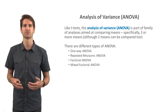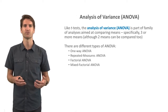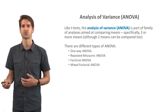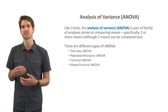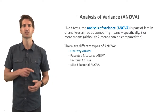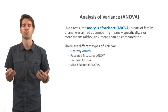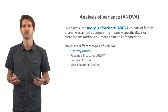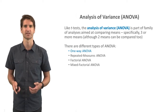There are different types of ANOVA: the one-way ANOVA, repeated measures ANOVA, factorial ANOVA, and mixed factorial ANOVA. In this lecture, we're going to focus specifically on the one-way ANOVA or the one-way analysis of variance.